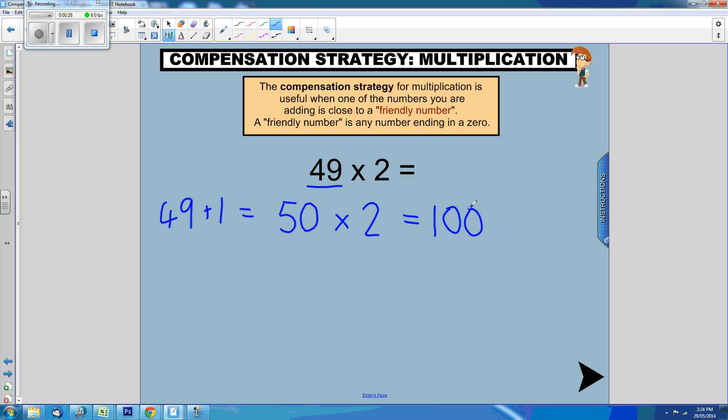Now, to compensate for the change that we made, we take that 1 that we added and multiply it by 2, and we get 2.